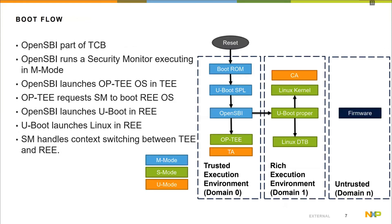Another important aspect worth mentioning is the boot flow. We used U-Boot as the bootloader and created a FIT image containing OpenSBI, the OP-TEE OS, and U-Boot proper. On system reset, the boot ROM launches U-Boot SPL in machine mode. SPL then loads OpenSBI, OP-TEE, and U-Boot proper to memory, then launches OpenSBI in M-mode. OpenSBI then launches OP-TEE in S-mode. When OP-TEE finishes booting, it performs an SBI call to switch to the rich execution environment, where U-Boot proper is launched, loads the Linux kernel and DTB, and gives control to the kernel to boot.